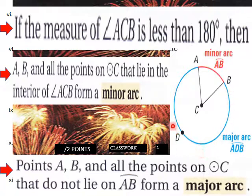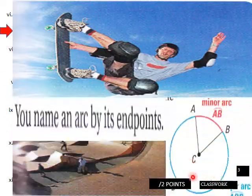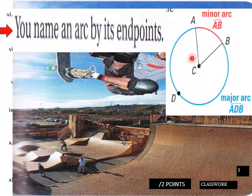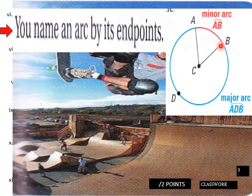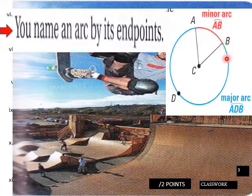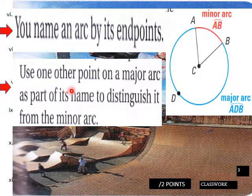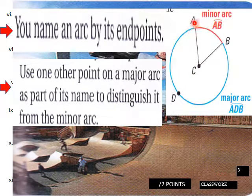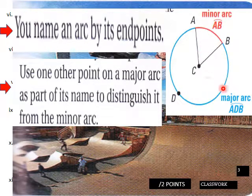The other side of the circle is the major arc, and this side is the minor arc. You name an arc by its endpoints: minor arc AB begins and ends at A and B going clockwise. A major arc would be named ADB — we use an extra point like D to distinguish it. Use one other point on a major arc as part of its name, otherwise the major and minor arcs would have the same name.